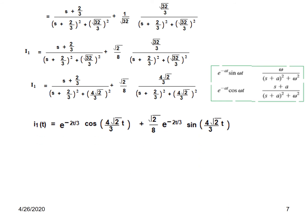So i1(t) will now be: the first term exactly matches the cosine formula, giving e to the power minus 2 over 3 times t, cosine of omega t, where a equals 2 over 3 and omega is 4 under root 2 over 3. Plus the constant under root 2 over 8, times e to the power minus 2 over 3 t, times sine omega t. This is the answer for i1(t) in the time domain.